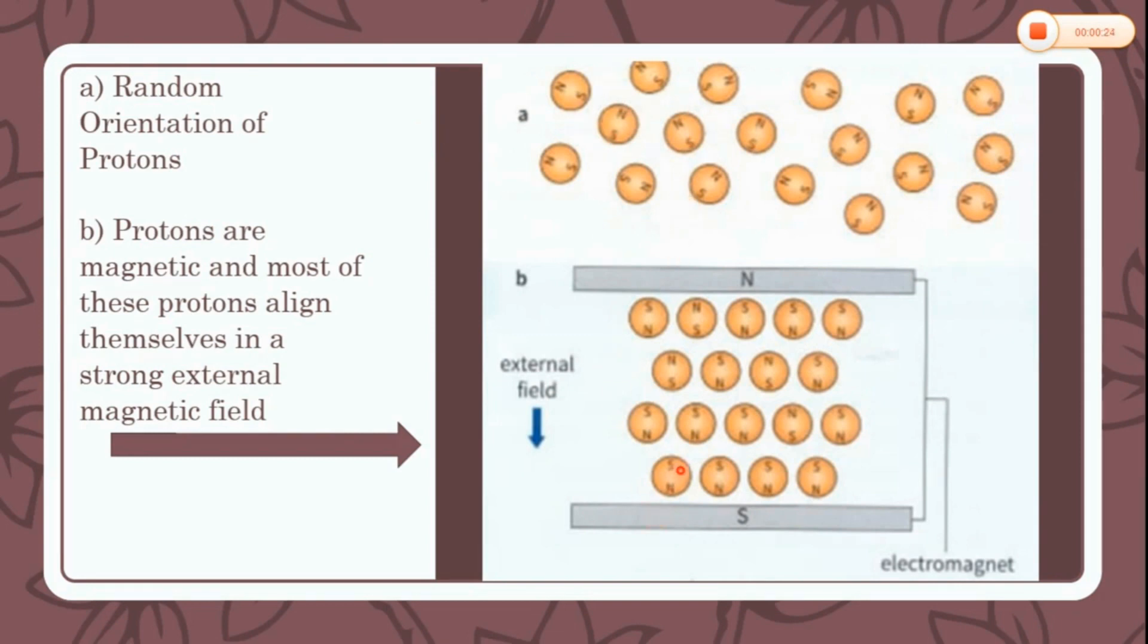In the second case, there is an external magnetic field. Under the influence of this strong magnetic field, most of these tiny magnets, which are the hydrogen nuclei, align themselves with the field. This alignment is similar to plotting compasses lining up. The majority line up with their north poles facing the south pole of the external field, corresponding to a lower energy state.